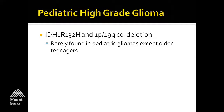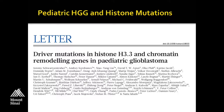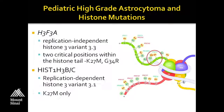Instead, what pediatric gliomas most frequently have are histone mutations. This was the landmark paper published by Nada-Jabato's group several years ago where, using whole exome sequencing of a series of pediatric high-grade gliomas, they found mutations in the histone gene H3.3, as well as some of the other chromatin remodeling genes in pediatric GBM.